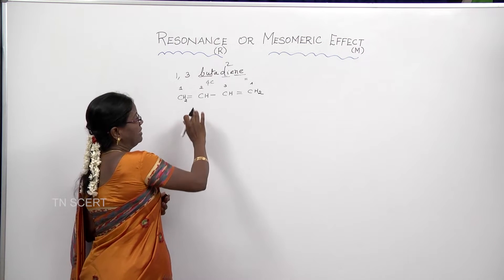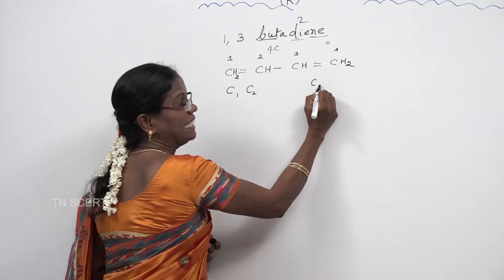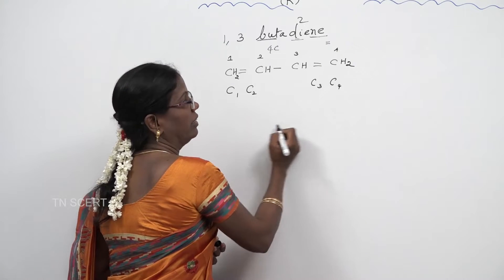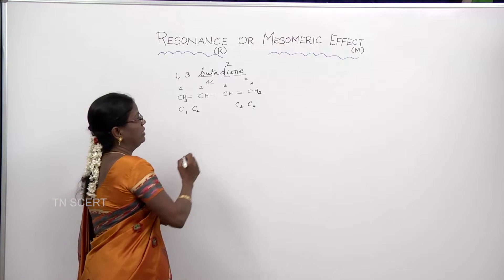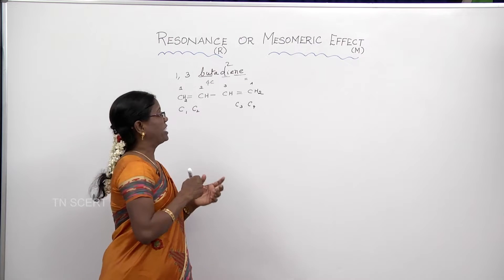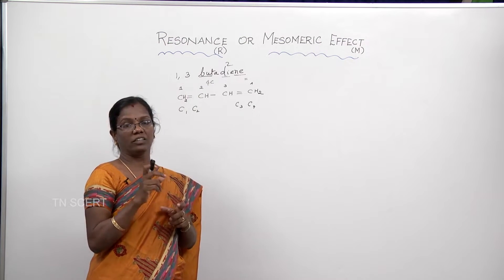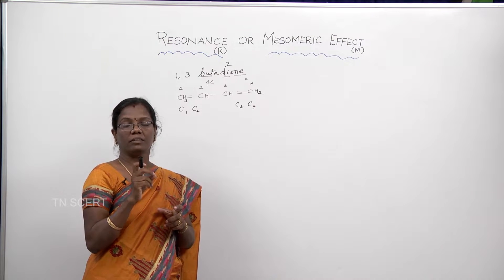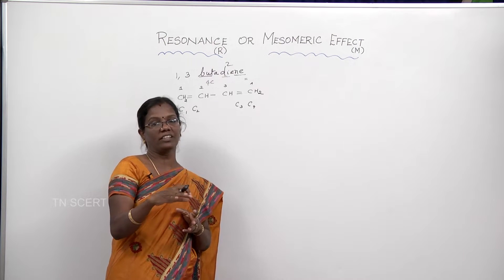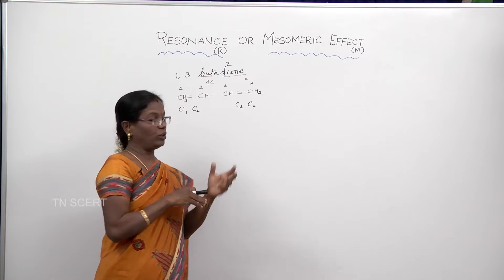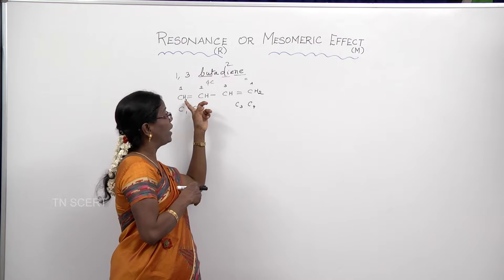Now, coming to resonance — the bond length between C1 and C2, and likewise C3 and C4, should differ from the single bond between C2 and C3. Since this molecule contains two double bonds and one single bond, we expect the bond length of the double bonds and single bond to be different. But actually, all the bond lengths are equal. So having only this structure, we cannot explain the equality in bond length.